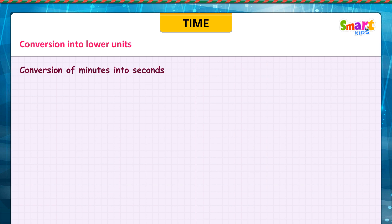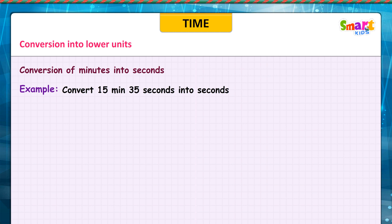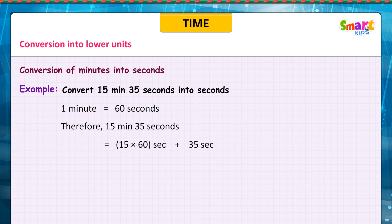Conversion of minutes into seconds. Example: convert 15 minutes 35 seconds into seconds. We know that 1 minute is equal to 60 seconds. Therefore, 15 minutes 35 seconds is equal to 15 × 60 seconds plus 35 seconds, which is equal to 900 seconds plus 35 seconds, which is equal to 935 seconds.